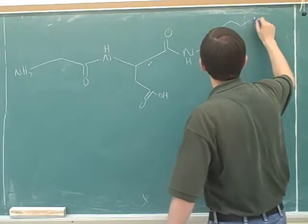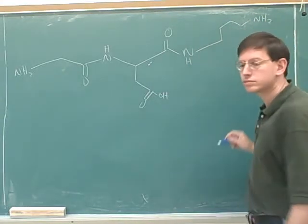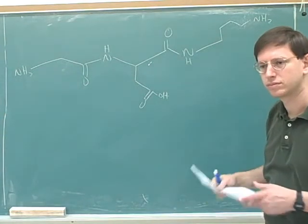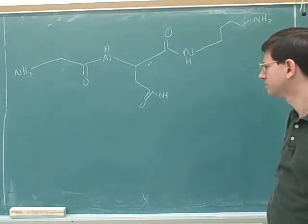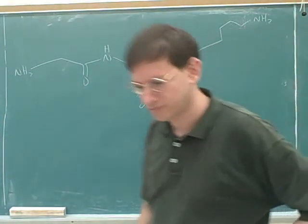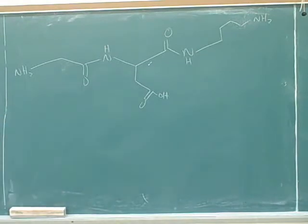He was asking us theoretically what would be an example of a molecule that doesn't have a pI. And he gave us two: acylated with six glycines in a row, or a ring.